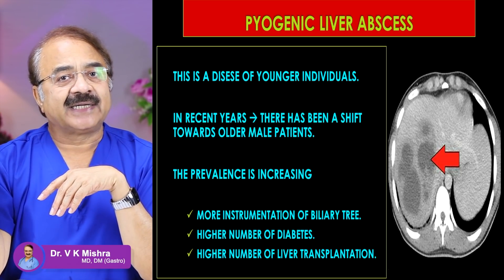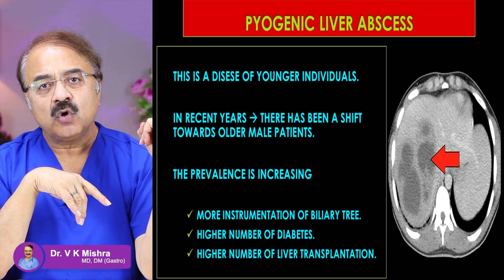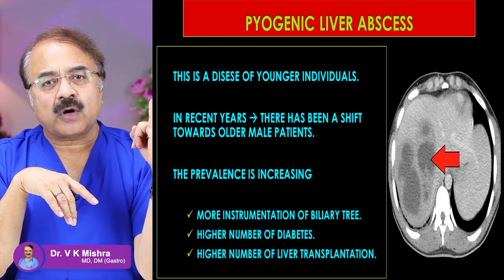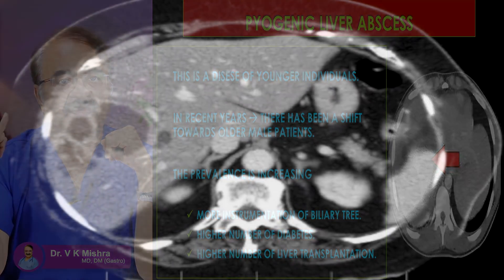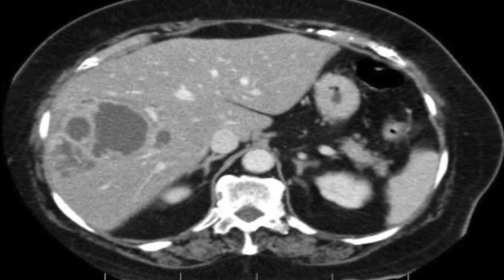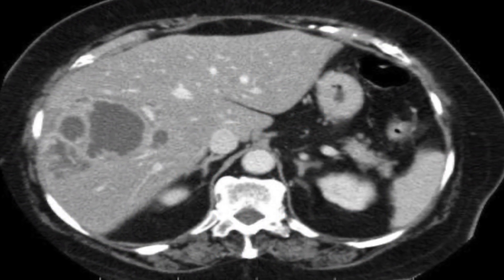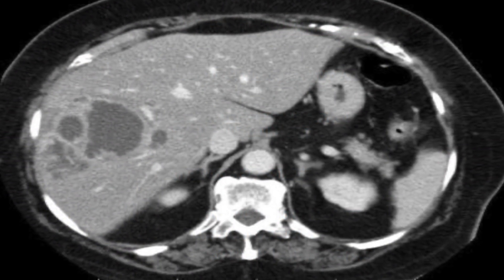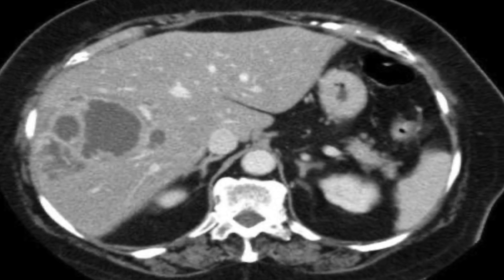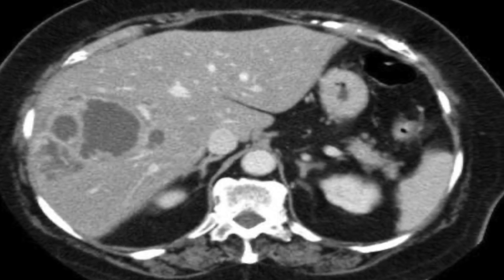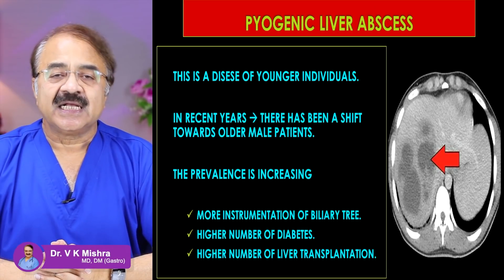There are many reasons for the rising incidence. Number one, the incidence of diabetes is very large. Number two, immunocompromised states like HIV or cancer are increasing. Because of low immunity, the incidence of pyogenic liver abscess is increasing significantly.